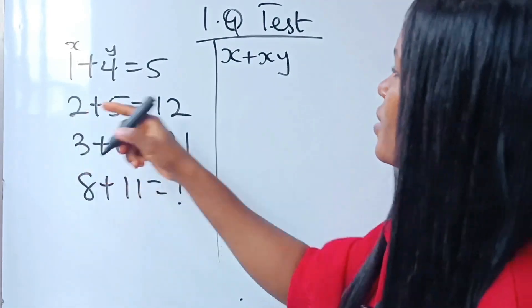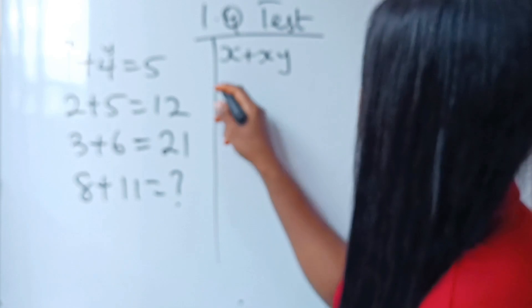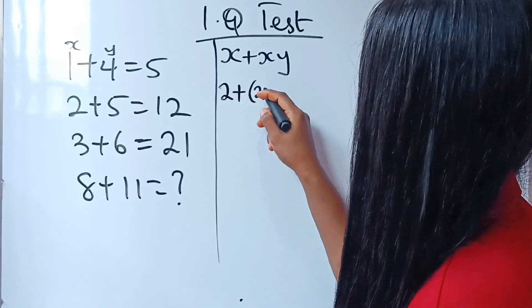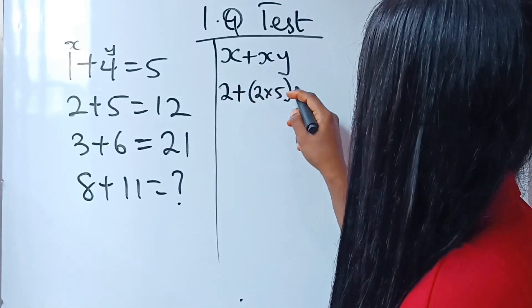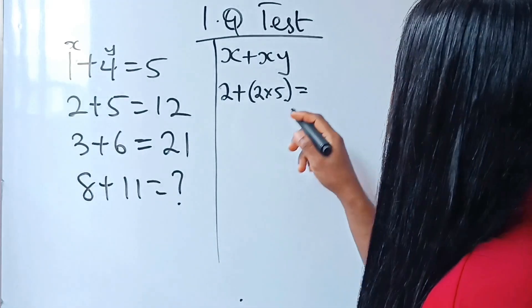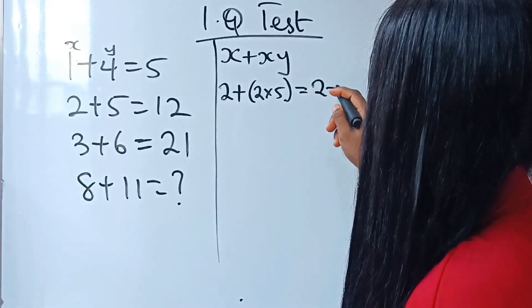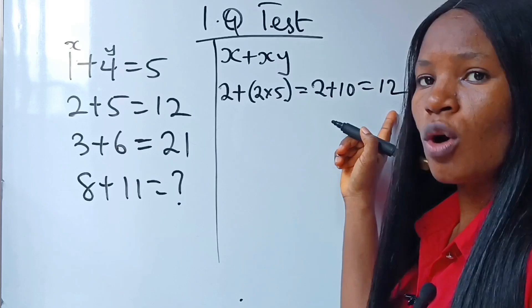So for this one is going to be 2 plus 2 times 5, which is equal to 2 plus 10, which is what? 12.